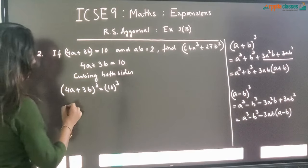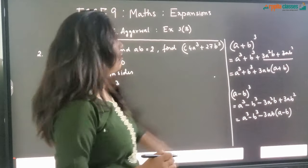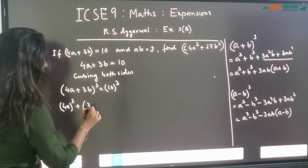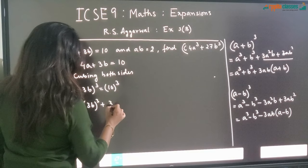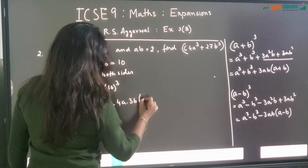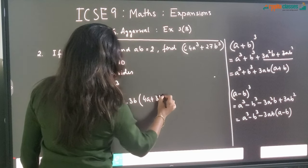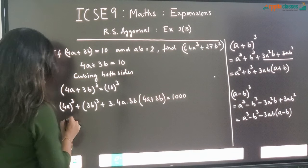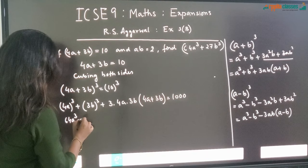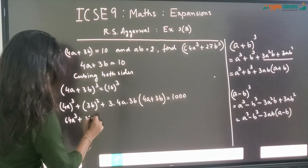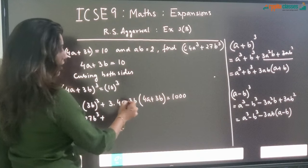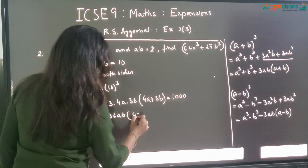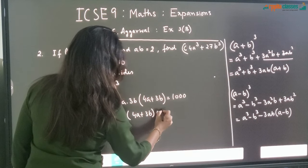Now let us put the formula. I am going to use the second form of A plus B whole cube. So this will be 4A whole cube plus 3B whole cube plus 3 into 4A into 3B whole into 4A plus 3B, and that is equal to 1000. Now, 4A whole cube is 64A cube, plus 3B whole cube is 27B cube, plus 3 into 3 is 9 into 4 is 36AB, and 36AB whole into 4A plus 3B is equal to 1000.